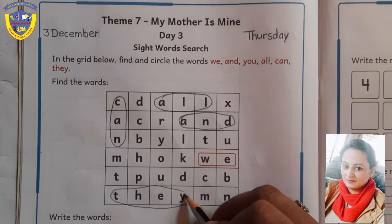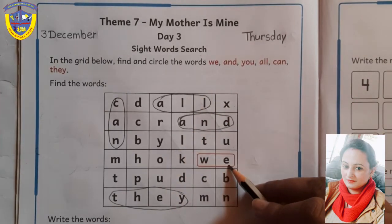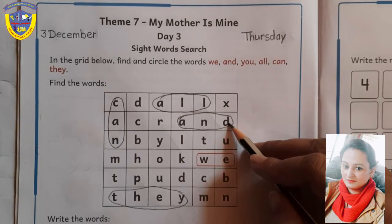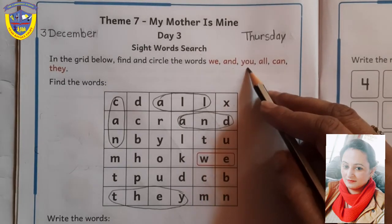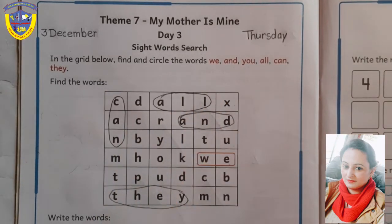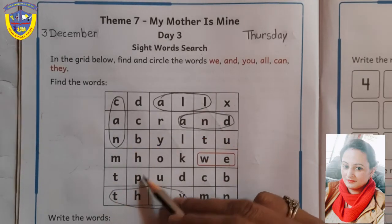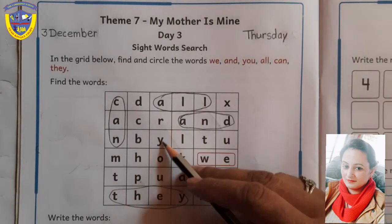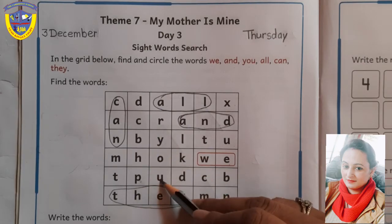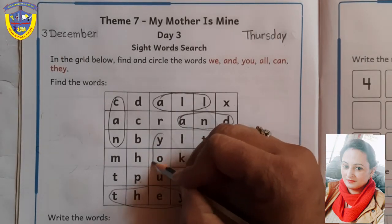Which is left? Done. Done. U is left. Find out. No. Yes. Y-O-U. Now circle it.